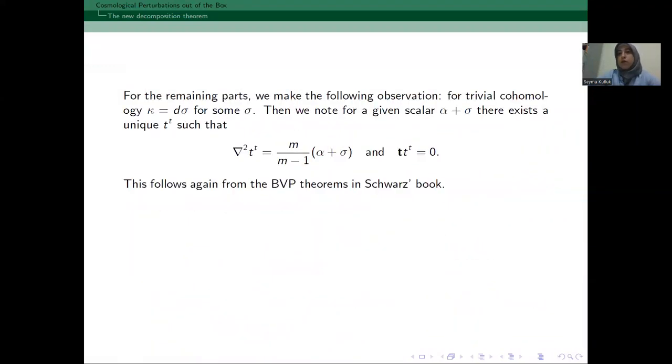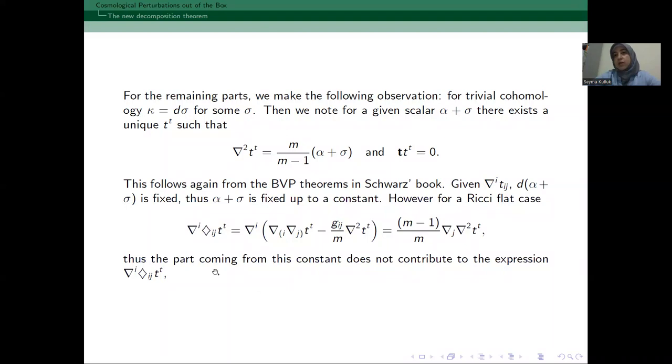Now, for the remaining parts, we have the following observation. If we are given a scalar alpha plus sigma, then there exists a unique TT that satisfies this equation and this boundary condition. Now, given a divergence of T, only D alpha plus sigma is fixed. So, alpha plus sigma is fixed only up to a constant. But for the Ricci flat case, the expression we are going to need does not depend on this arbitrary constant. And the expression we are going to need is this, del_i diamond_ij. And diamond_ij I just define as this. And as you can see for the Ricci flat case, the arbitrary constant disappears from this expression.